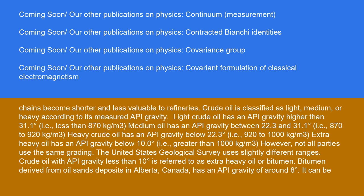However, not all parties use the same grading. The United States Geological Survey uses slightly different ranges. Crude oil with API gravity less than 10 degrees is referred to as extra heavy oil or bitumen.